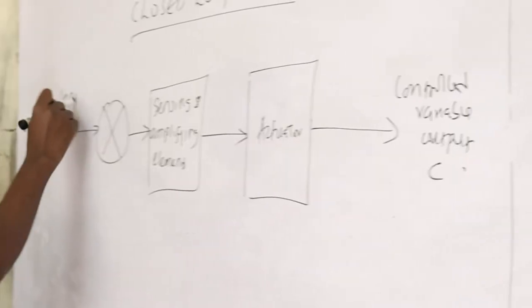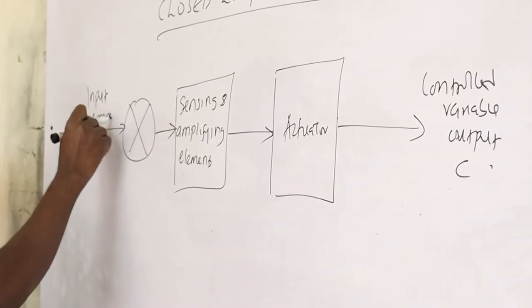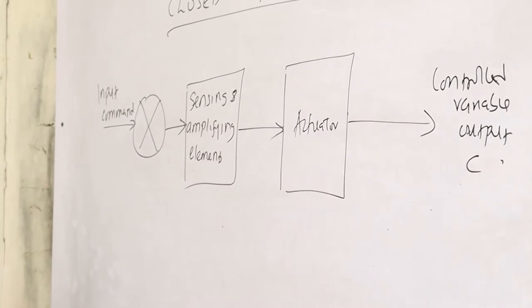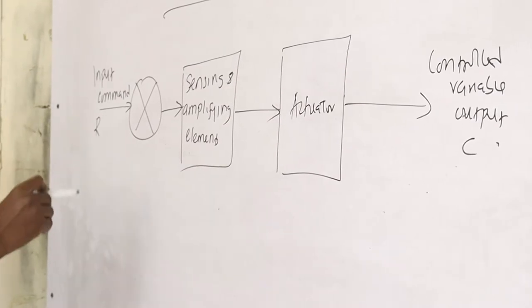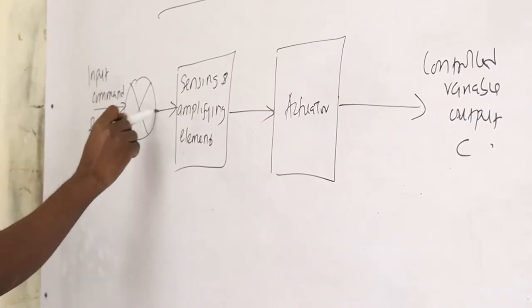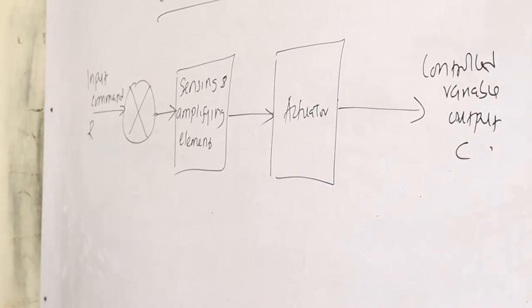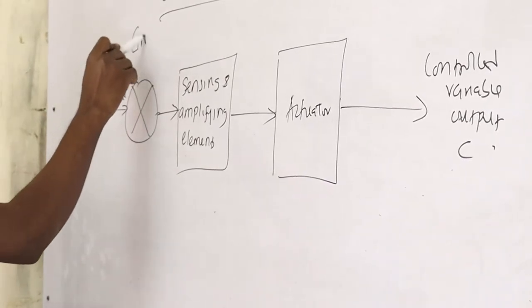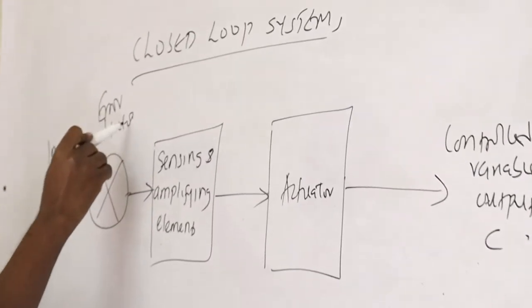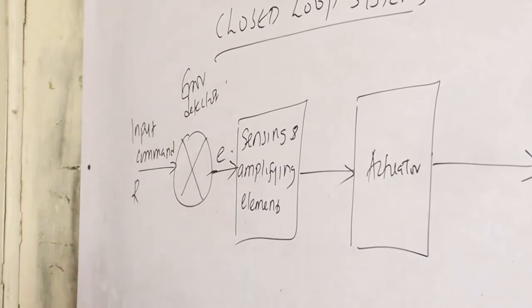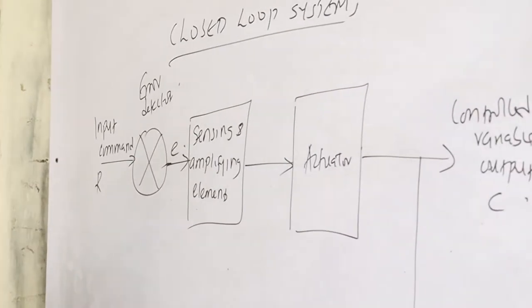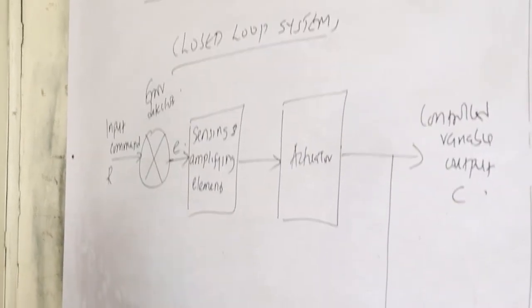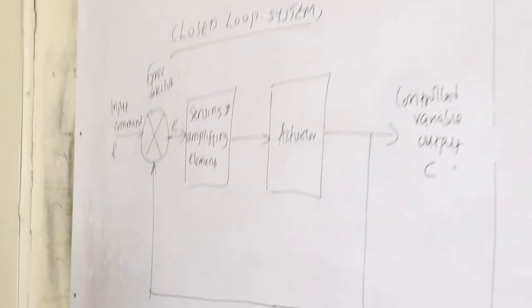We have the input command, which we always refer to as input R. Here we have the error detector, also called the comparator. The difference is the error, and what is at the output is fed back by use of a feedback path to the comparator.